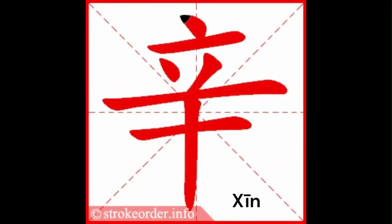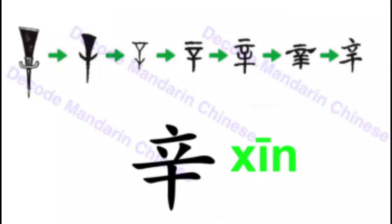This is a fun character in the Chinese language because the character Xin was originally a hot iron used to brand prisoners and slaves, that gradually morphed into its modern form. This makes it easier to learn.